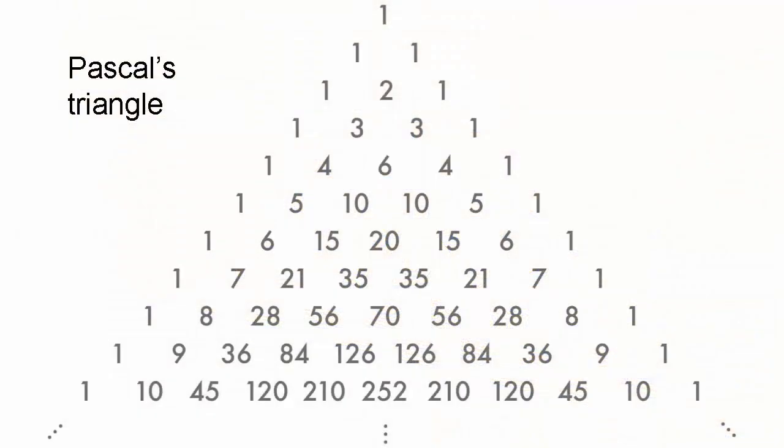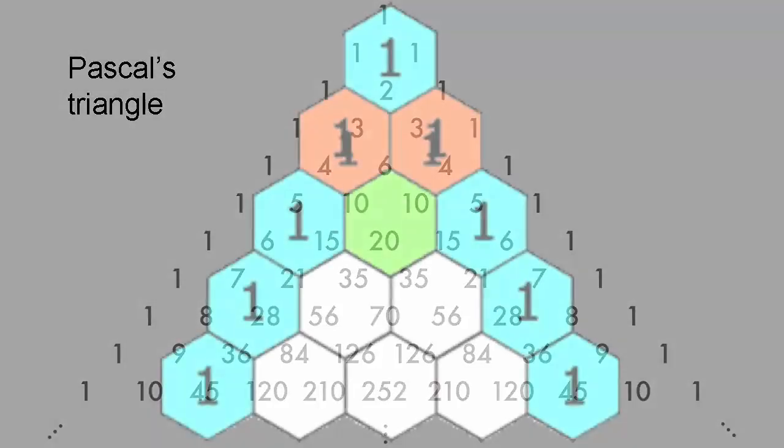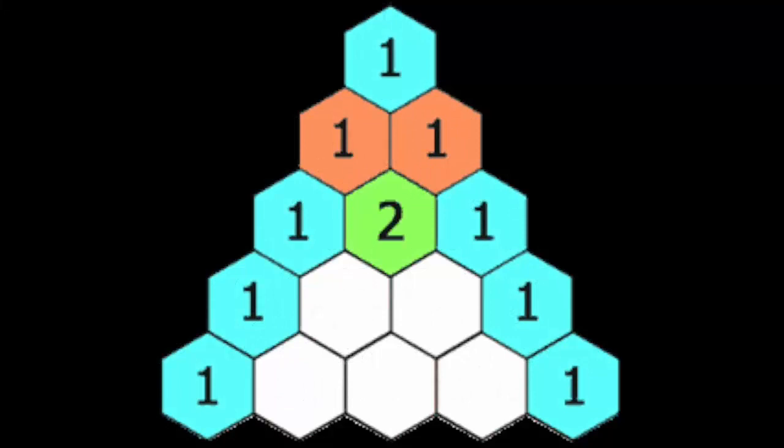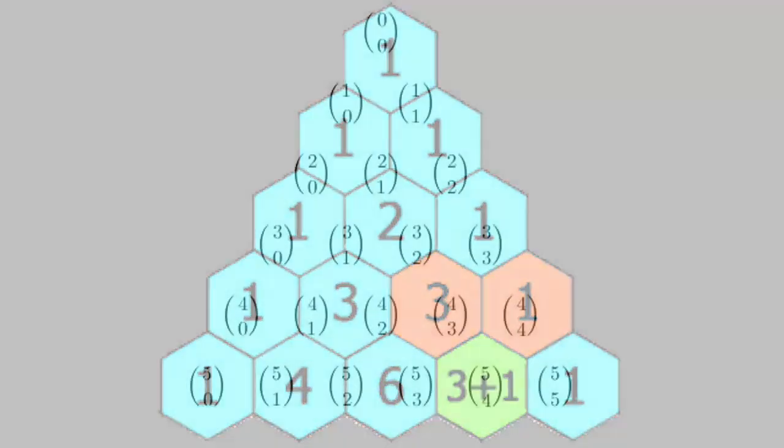Pascal's name is also associated with the famous triangle of numbers, Pascal's triangle, which he didn't discover, although he did important work on it. Starting with the number 1, each number in each subsequent row of the triangle is the sum of the two numbers directly above it. Most famously, Pascal's triangle determines the coefficients that arise in binomial expansions.